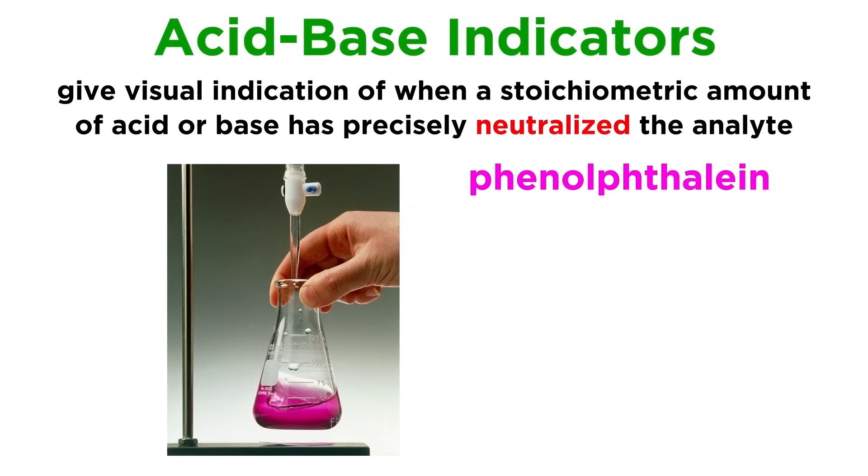One such substance is phenolphthalein. This is a substance that will be colorless in aqueous solution with hydronium concentration greater than 5 times 10 to the negative 9 molar, which corresponds to a pH below 8.3.